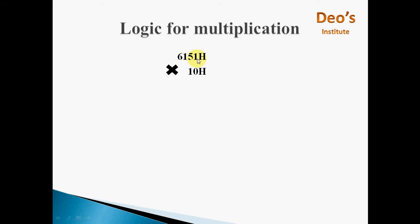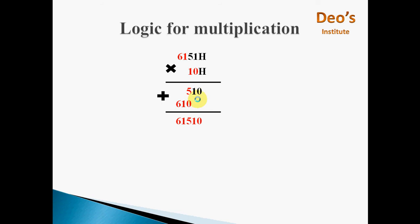The first step is to multiply the lower byte of the 16-bit number with the multiplier. So 51 multiplied by 10 gives 510. The next step is to multiply the higher byte by 10, giving 61 multiplied by 10 equal to 610. In the first multiplication result, 10 is the lower byte and 5 is the higher byte. We then add this higher byte to the result of the higher byte multiplication: 610 plus 5 gives 615, and this 10 remains as it is.